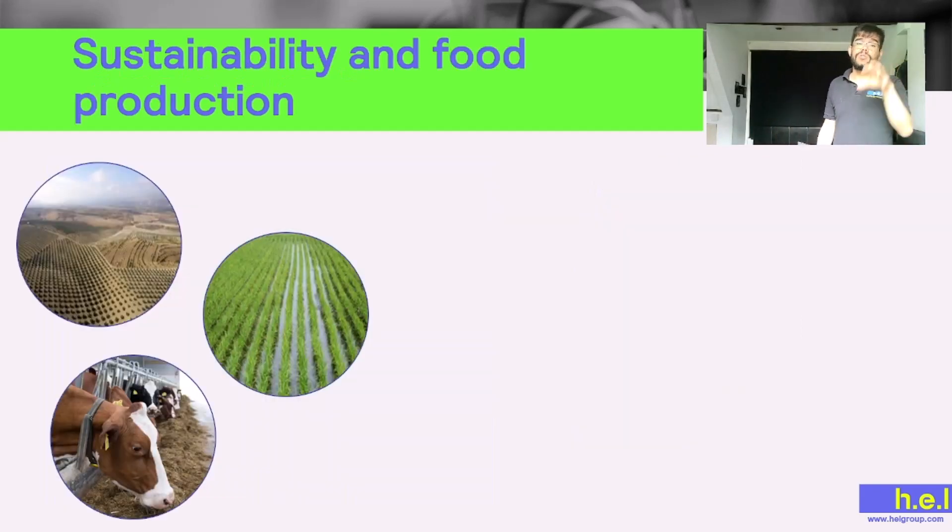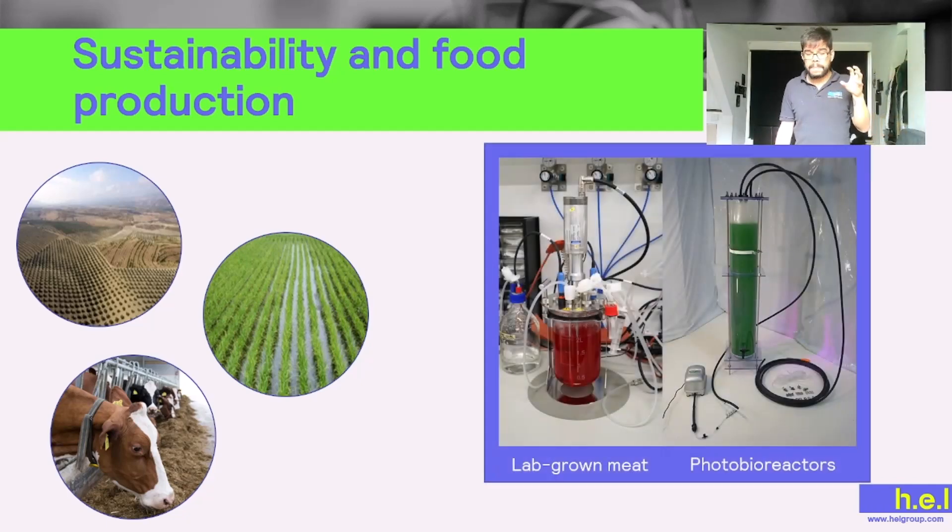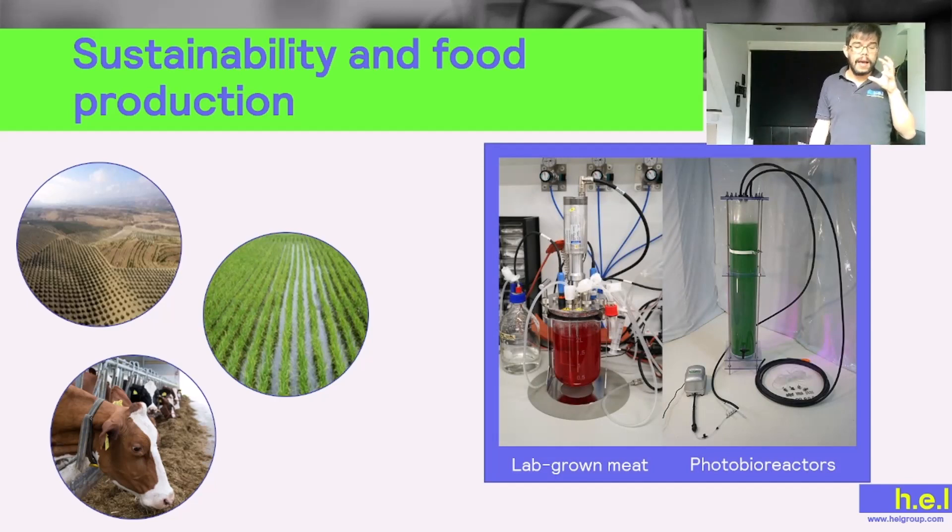This links to sustainability and food production. Another very big producer of methane every year is rice paddies. What happens with rice paddies is that we have to inundate large proportions of land to grow rice. When we have inundated land, microbial activity at the bottom of the water depletes oxygen. This oxygen depletion results in anaerobic processes happening, and one of these processes is methane production.